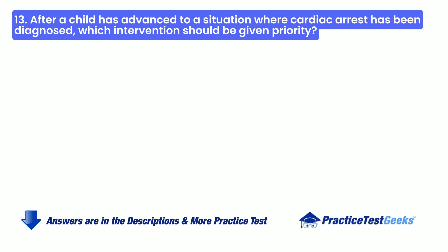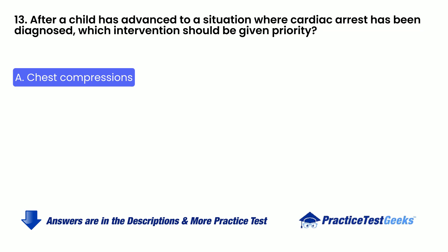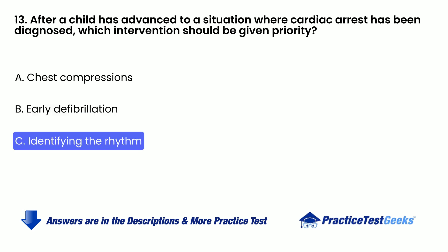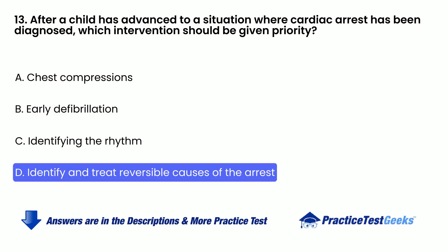After a child has advanced to a situation where cardiac arrest has been diagnosed, which intervention should be given priority? A. Chest compressions. B. Early defibrillation. C. Identifying the rhythm. D. Identify and treat reversible causes of the arrest.